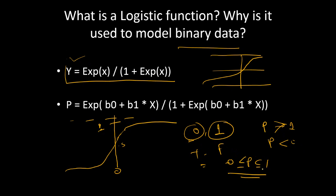Although probability is continuous in nature, it is bounded, and it is not ideal to model a bounded quantity directly. Hence, the logistic function ensures that the quantity we are modeling becomes unbounded. We do a transformation — we take the log odds. Log odds is the probability of an event happening divided by one minus that probability, which is the probability of the event not happening.